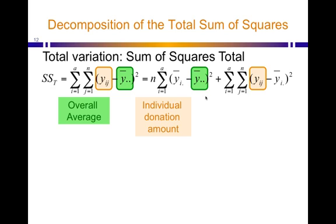Individual donation amounts are just the y with the ij subscripts. So, you know, one person donated $1,500, one person donated $1,000, one person donated $1,200. It's the 24 individual donation amounts are the y sub ij's.